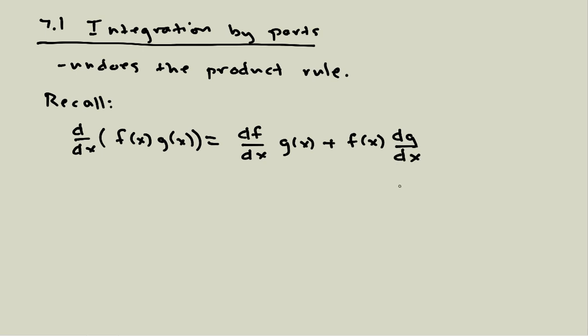This is what the product rule says. Sometimes we don't bother with all of the x's. So in prime notation, you can do f times g prime equals f prime g plus f g prime. Same rule, just written out in slightly different notation in each case.